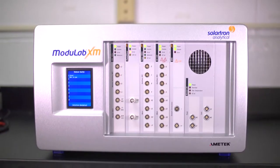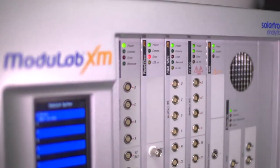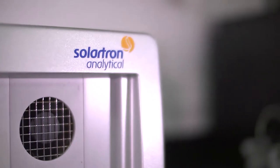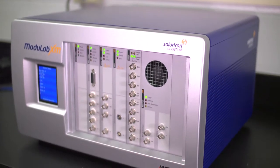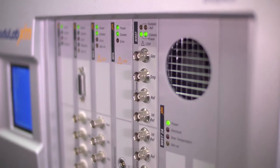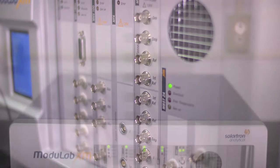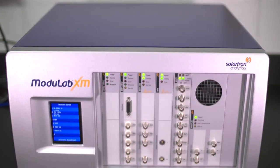Modulab XM-MTS is an extreme measurement materials test system that is able to measure from ultra-high impedance, low-capacitance dielectric and insulator materials to high-conductivity materials in the micro-ohm range. The Modulab XM-MTS does it all.